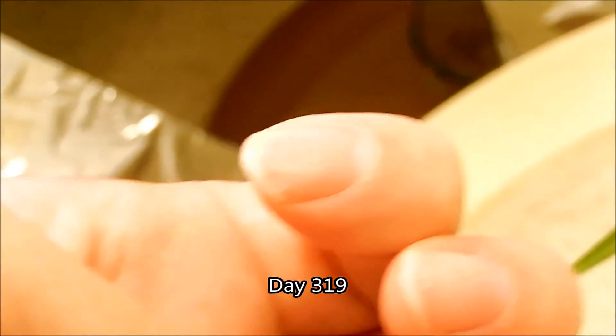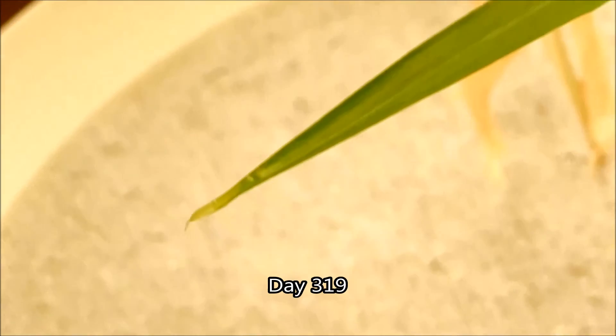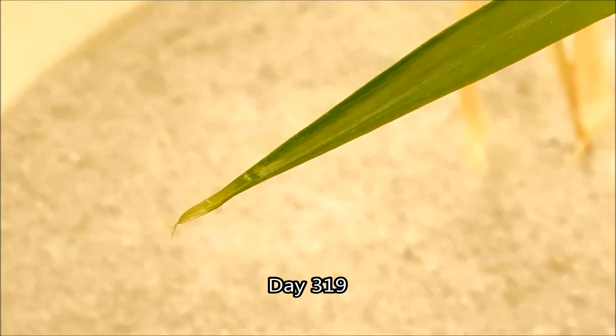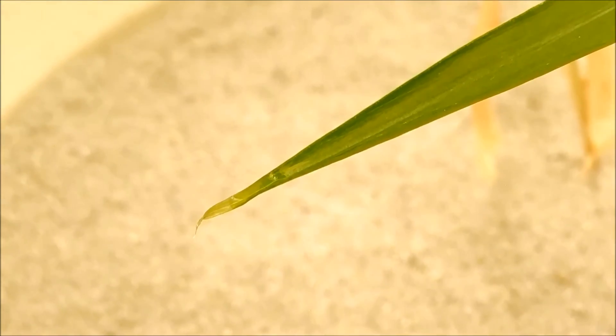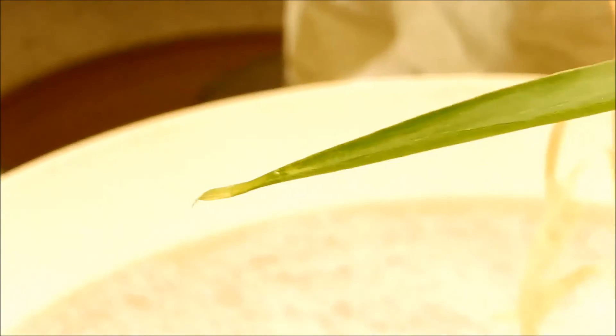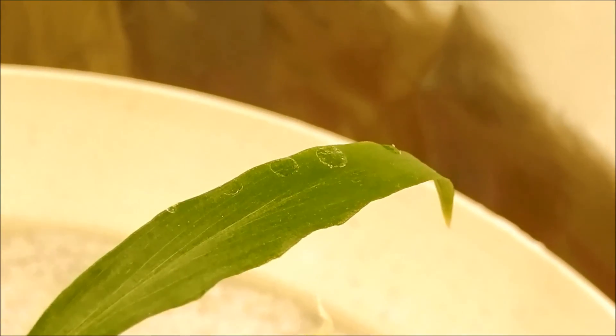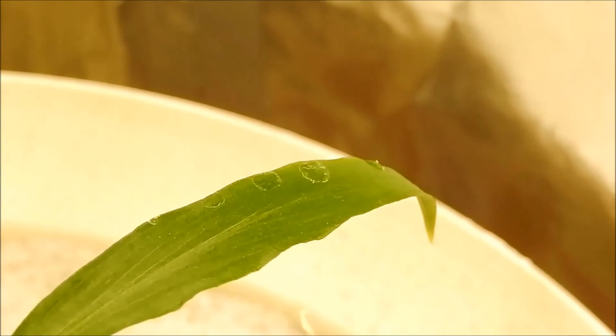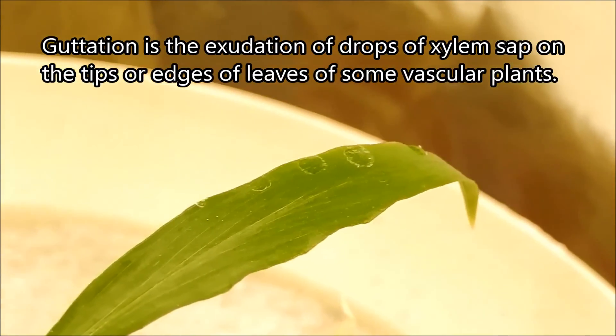It's day 319, and on my fingernail, you can see a drop of fluid, and that came from here. So this has been a nightly occurrence, drops of fluid appearing on the leaf tips and edges of the leaves. This is actually a process known as gutation, which occurs mostly during night.